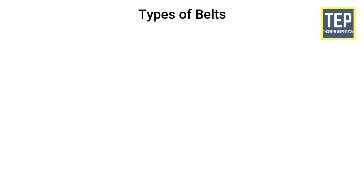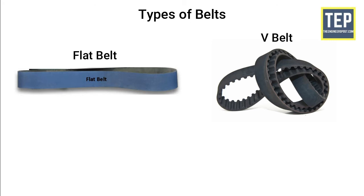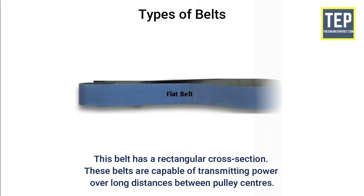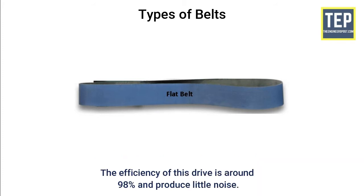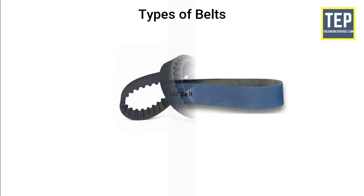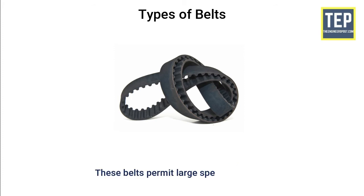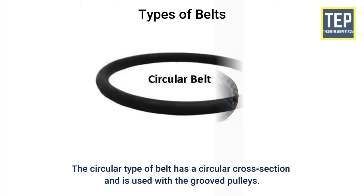There are three most commonly used types of belts: flat belt, V-belt, and circular belt. Flat belt has a rectangular cross section and is capable of transmitting power over long distances between pulley centers — the efficiency of this drive is around 98% and it produces little noise. V-belts are used with grooved pulleys and are trapezoidal in cross section; these belts permit large speed ratios and can transmit higher power.